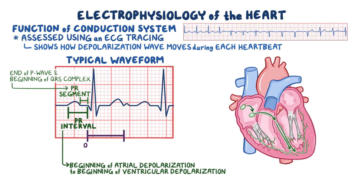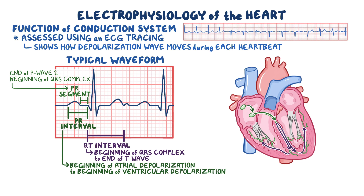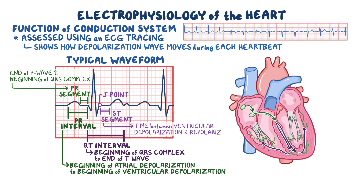Then there's the QT interval, which spans from the beginning of the QRS complex to the end of the T wave. It represents ventricular systole — the entire span from depolarization through repolarization. Within the QT interval, there's the ST segment, which spans from the end of the QRS complex, called the J point, to the end of the T wave, and represents the time between ventricular depolarization and repolarization.